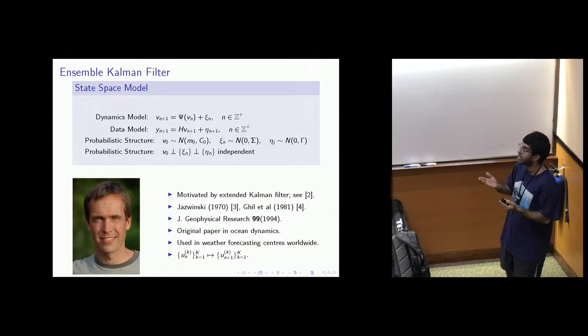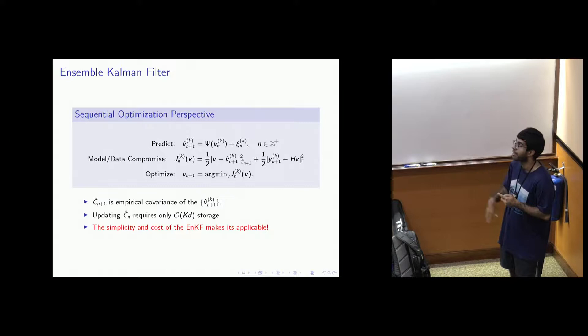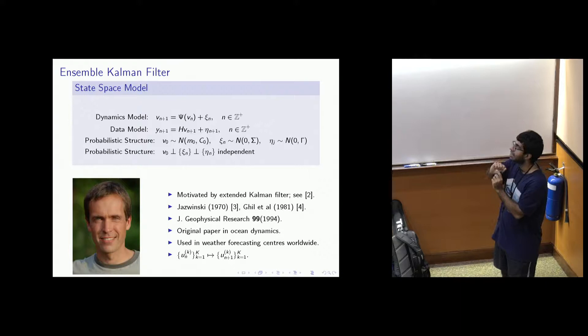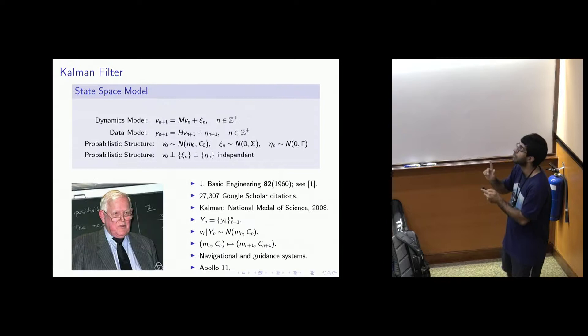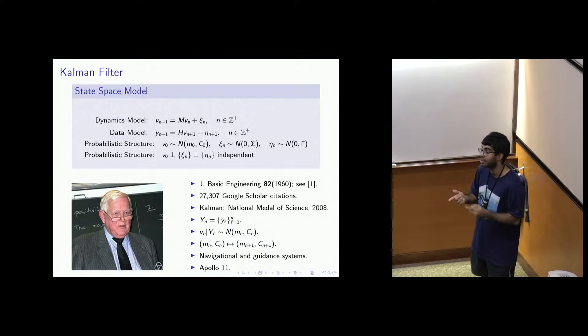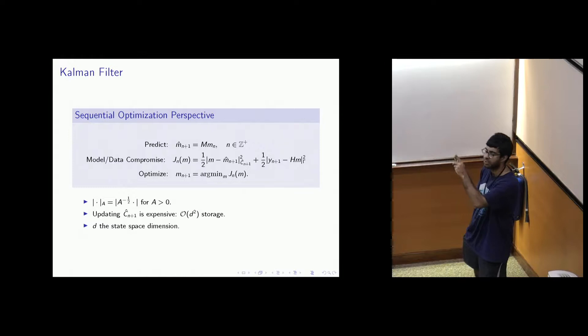The EnKF is a Monte Carlo approximation of the Kalman filter and reduces computational cost significantly. Other variants, such as the extended Kalman filter and 3D-Var, come in between these two methods. Their key distinction from the standard Kalman filter is that they try to move away from the linearity assumption of the dynamics and allow for nonlinear dynamics, sitting computationally between the Kalman filter and the EnKF.